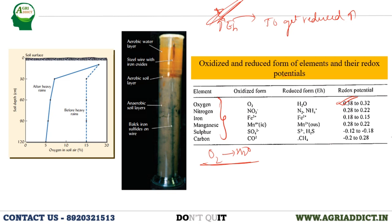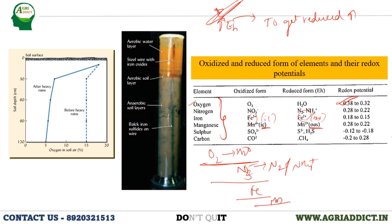After oxygen, the reduction sequence continues: nitrate (NO3⁻) is reduced to N2 or NH4⁺, then Fe³⁺ (ferric) to Fe²⁺ (ferrous), then Mn⁴⁺ (manganate) to Mn²⁺ (manganese ions). Remember: higher oxidation states use the suffix '-ic' and lower ones use '-ous'. The full sequence in waterlogged soils is: oxygen → nitrogen → iron → manganese → sulfur → carbon. You need to remember the oxidized and reduced forms and their respective redox potentials.